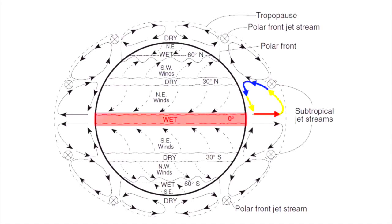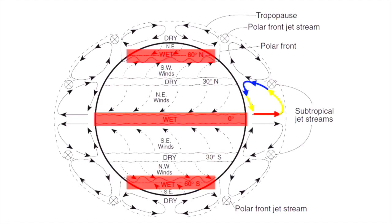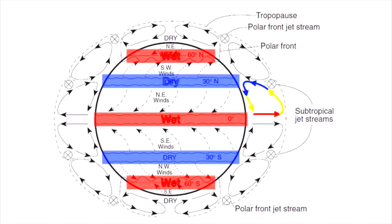Anywhere where air is rising, we call that a wet area — at zero degrees, 60 degrees north, and 60 degrees south. As air rises, it picks up water vapor, which is a big factor in forming clouds. So we have wet zones because the air is rising, creating low pressure. Where the air is sinking, we have dry zones — the air is condensing, getting denser, and coming back down to Earth. That happens at 30 degrees north and south, as well as the north and south poles.